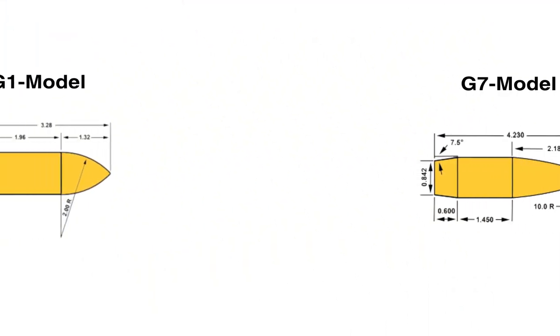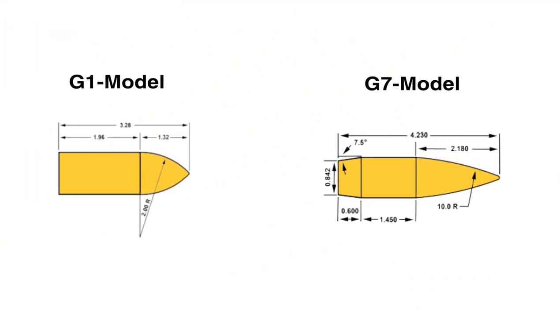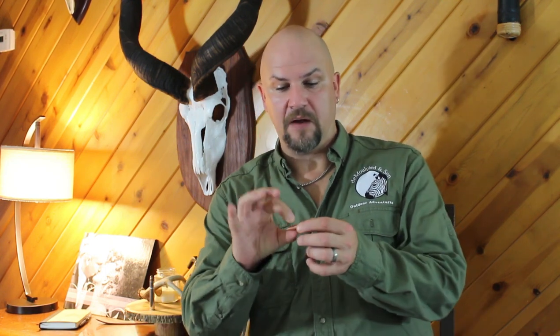There are two models against which all of our bullets are compared: the G1 model and the G7 model. These are just arbitrary designs with which we can reference our particular bullet. The G1 model is a flat-based Spitzer bullet, much like this Nosler Partition I've got right here. As you can see, it's a Spitzer point but with a flat base, while the G7 model is a Spitzer bullet with a severe boat tail, much like this Hornady SST.